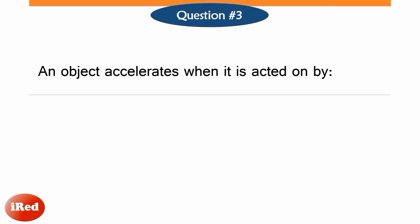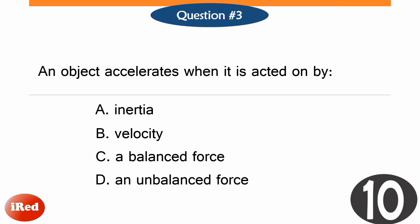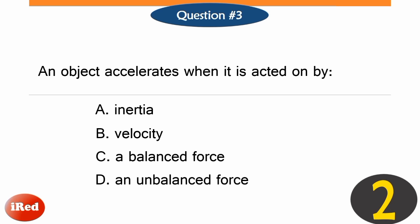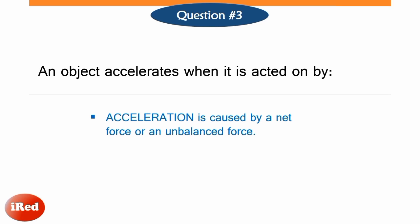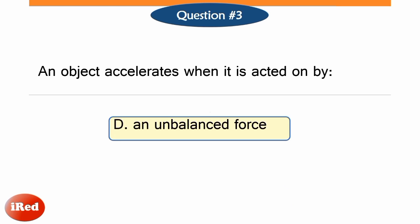An object accelerates when it is acted on by: letter A, inertia; letter B, velocity; letter C, a balanced force; or letter D, an unbalanced force. Acceleration is caused by a net force or an unbalanced force. An object will accelerate only when there is a net force or an unbalanced force acting on it. If the forces acting on an object are balanced, then there is no acceleration. So the correct answer is letter D, an unbalanced force.